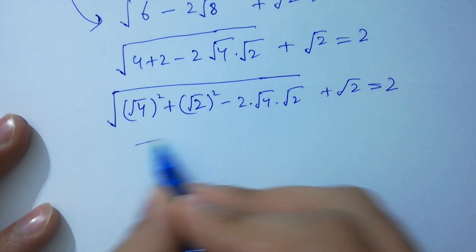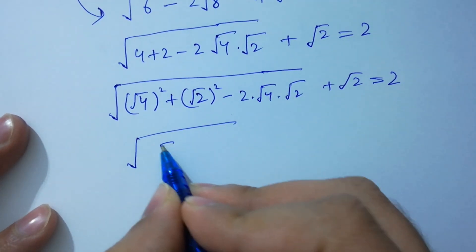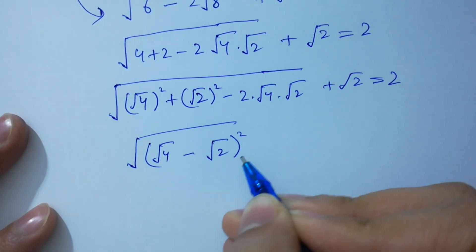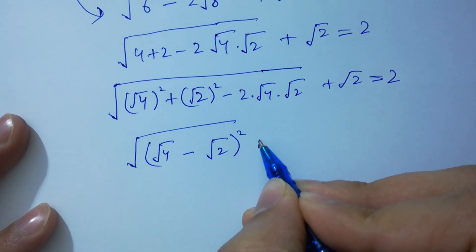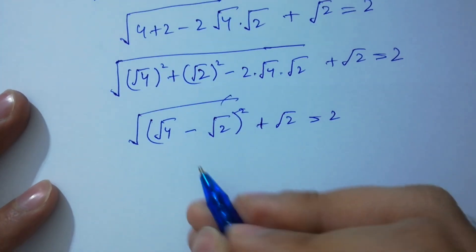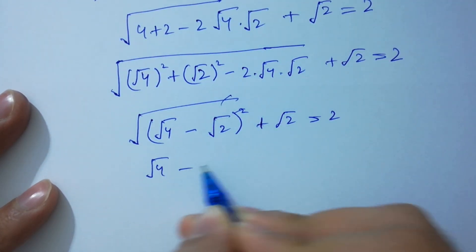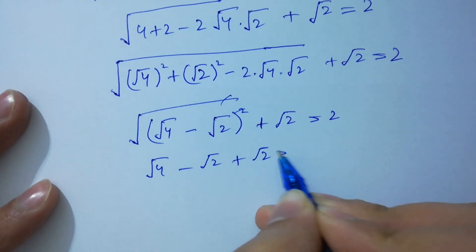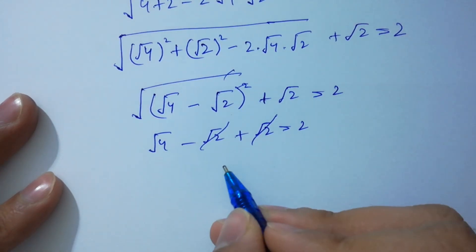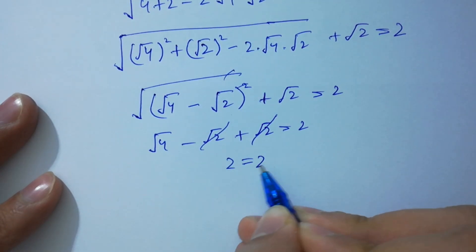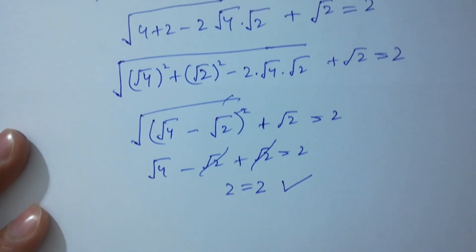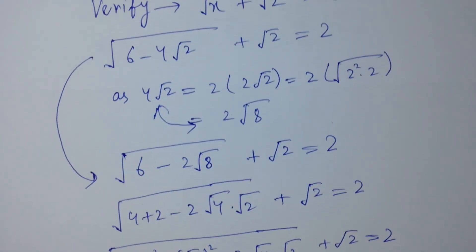This matches the formula (a minus b) whole square, specifically (square root of 4 minus square root of 2) squared. So the square root gives square root of 4 minus square root of 2, and adding square root of 2: square root of 2 and square root of 2 cancel, leaving square root of 4 equals 2, and 2 equals 2, which satisfies the equation. Thanks for watching this video — please subscribe to this channel to get notifications of new videos.